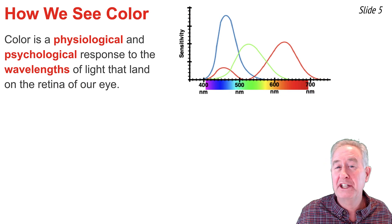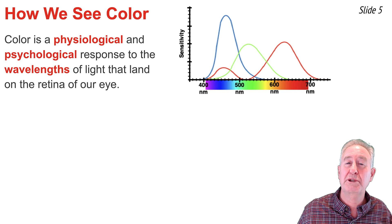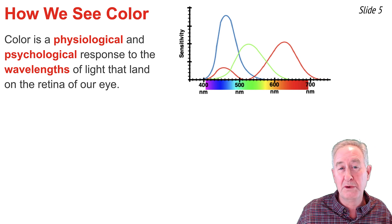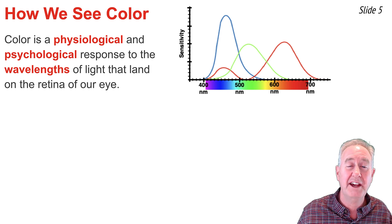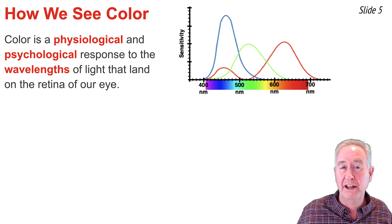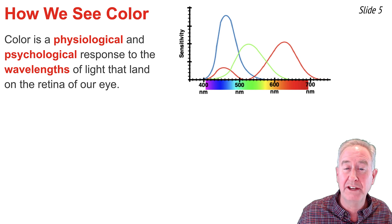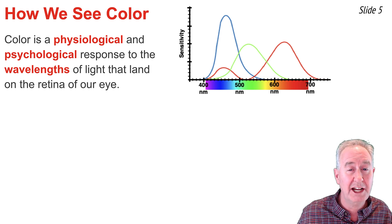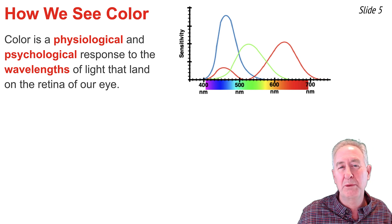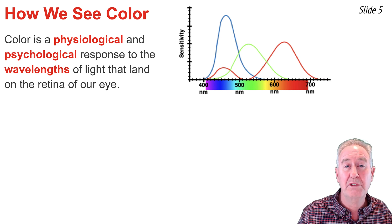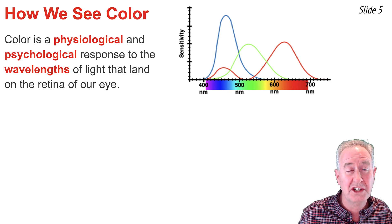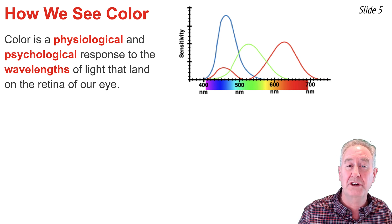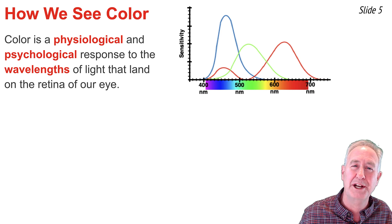Color is a physiological and psychological response to the wavelengths of light that strike the retina of the eye. When light of a wavelength within a cone's sensitivity range strikes the retina, that cone responds physiologically and sends a signal to the brain. When the brain receives the signal, it responds psychologically and interprets the signal in order to determine the color of the object being viewed.